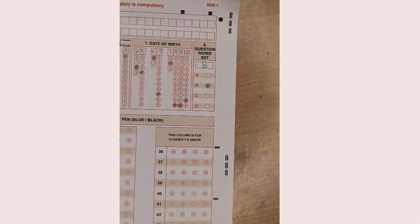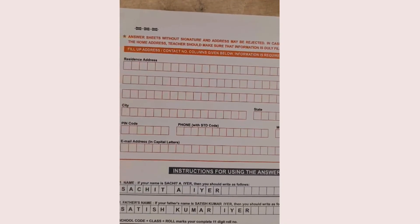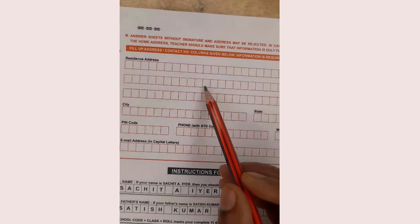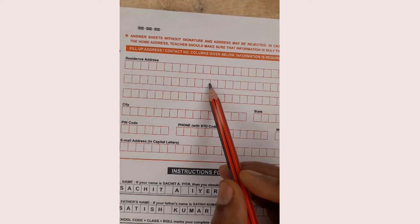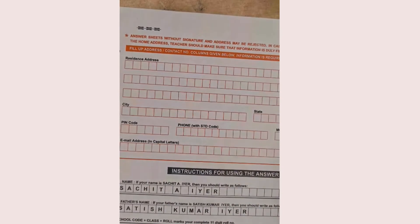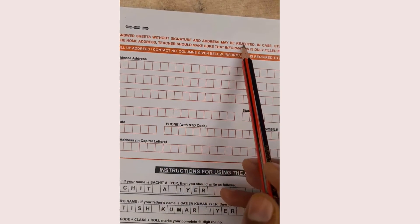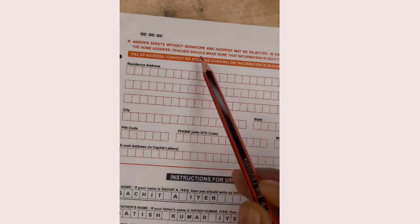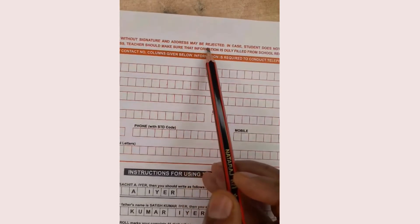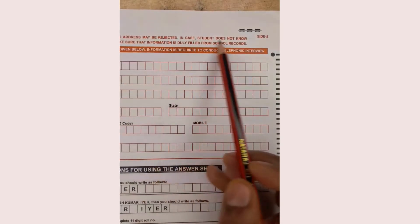There is one more side to the OMR sheet — side two. Here you have to write your address. The sheet clearly states that answer sheets without a signature and address may be rejected. In case the student does not know the home address, the teacher should make sure the information is filled in from school records.